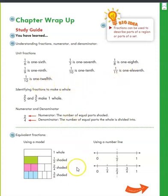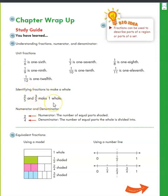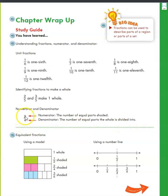We also learned identifying fractions to make a whole, which means that if we have two fractions with the same denominator, we can add them together. So two-fifths and three-fifths would make five-fifths, which is one, or the whole thing. The numerator is the number of equal parts, and the denominator is the number of equal parts the whole thing is divided into — so in this case, two parts out of a total of four parts, or two-fourths.